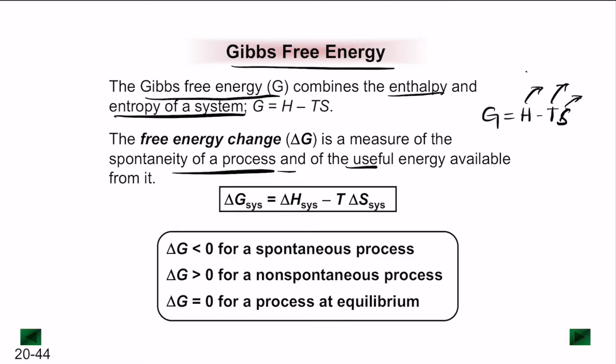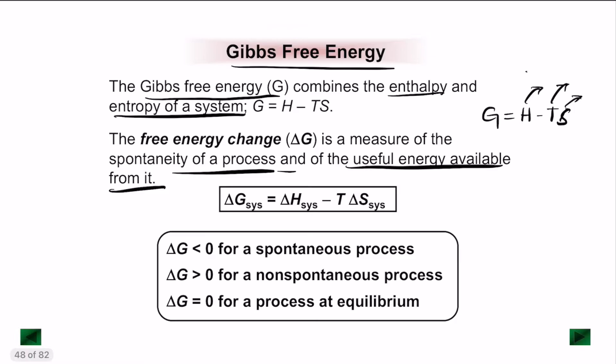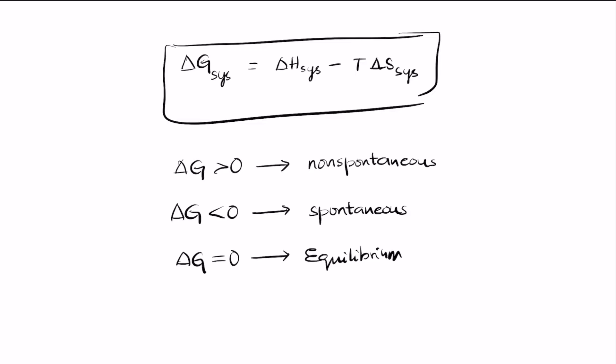Delta G is a good measure because there are three cases. If delta G is greater than zero, we call that a non-spontaneous process. If delta G is less than zero, the reaction is spontaneous. And if delta G is equal to zero, the system is at equilibrium and there is no net change in the forward or reverse reactions.